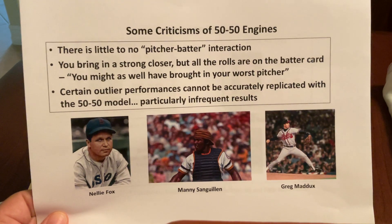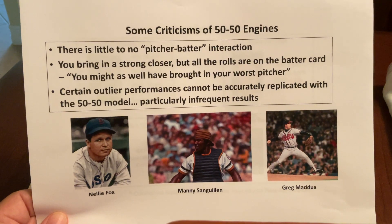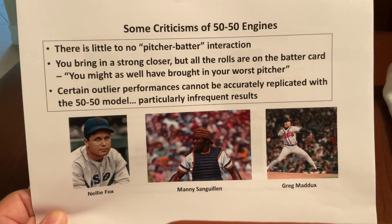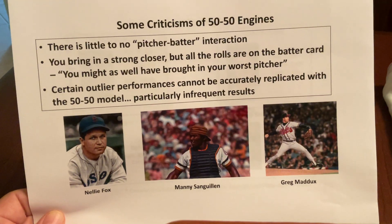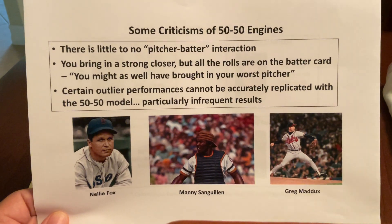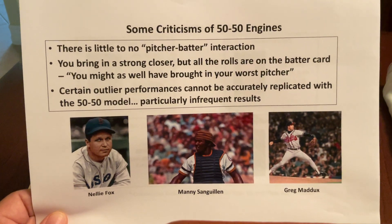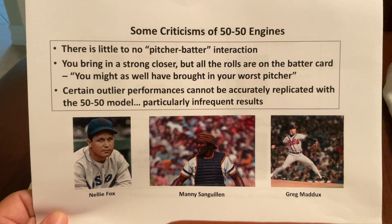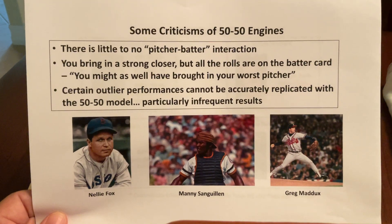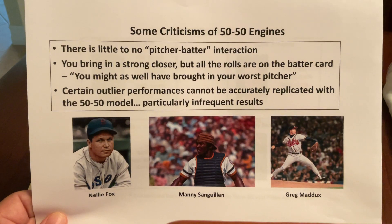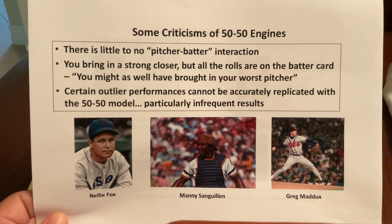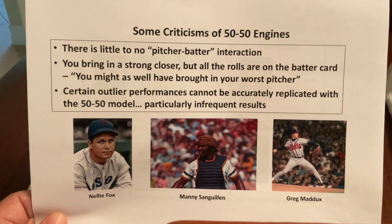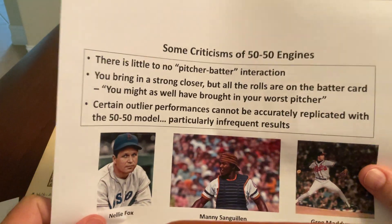Another commonly voiced criticism: if you bring in a strong closer but all the rolls land on the batter card, the pitcher never gets to influence the result — you might as well have brought in your worst pitcher. Over time that strong closer will get his fair share of control, but it's a valid criticism. The other very common complaint is that certain outlier performances can't be accurately replicated in the 50-50 model, particularly infrequent results.